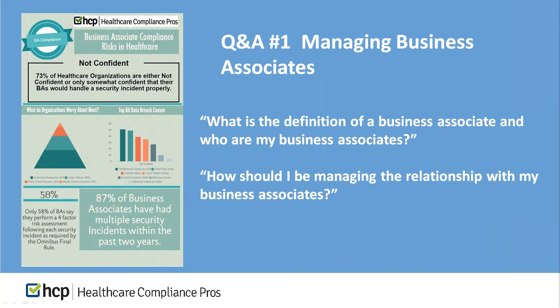How should I be managing the relationship with my business associates? Participants currently using our services can go to an office within their HCP program and click on the forms tab. Within the forms tab, they'll find a couple of documents that will be very helpful. The first is called the business associate decision-making matrix — you can find it by doing a keyword search for 'business associate.' There's also an audit spreadsheet to help you track your business associates and whether or not you have an updated agreement with them.